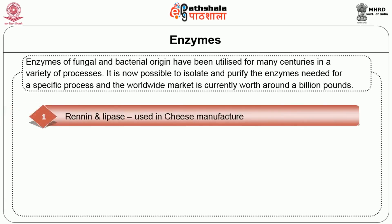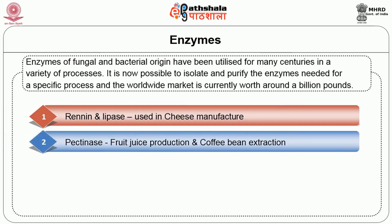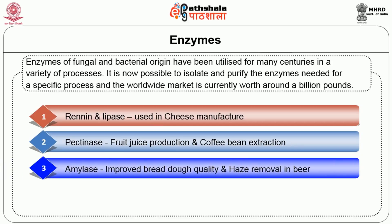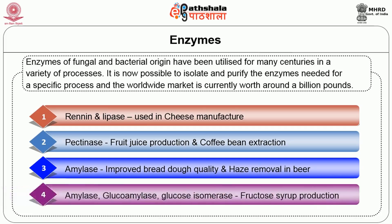Rennet and lipase can be used in cheese manufacturing industries. Pectinase is very essential for fruit juice extraction as well as coffee bean extraction. Amylase is used to improve bread dough quality and also for haze removal in beer production. Amylase, glucoamylase and glucose isomerase are important enzymes which have a major role in fructose syrup production.